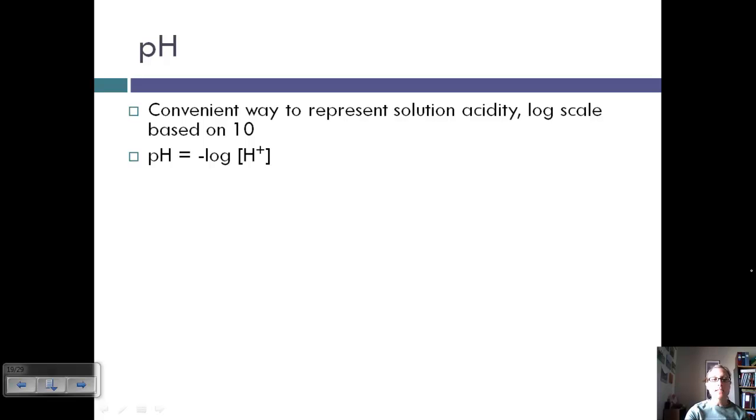pH is equal to the negative log of the H plus concentration. So if H plus is 1 times 10 to the negative 7, then the pH is equal to the negative times negative 7, which is equal to 7.